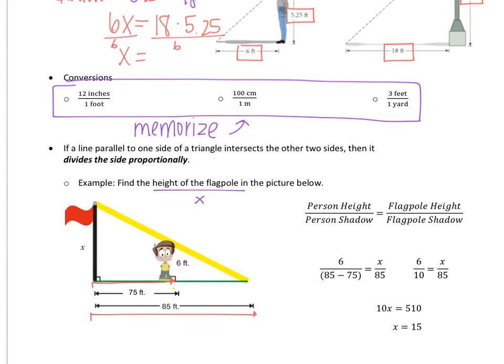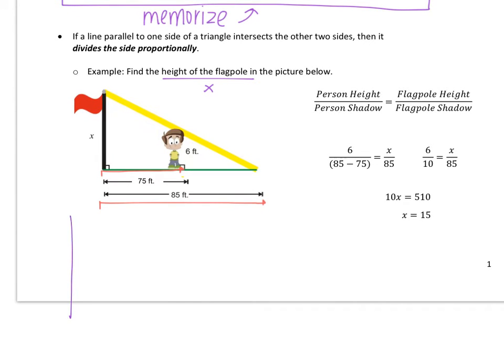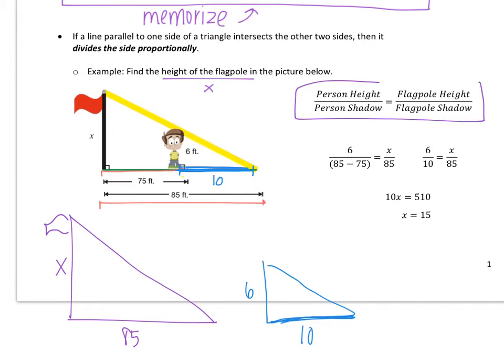So our goal is to find the height of the flagpole. If I were to redraw these pictures, we have the flagpole with its shadow, a height of X, a shadow of 85. Then we have the person with a height of 6 and some shadow length here. This blue piece at the bottom for his shadow is the same as this blue piece here from his feet towards the edge of the shadow, the tip of the shadow. Which means I have to take 85 and subtract away 75. 85 minus 75 leaves me with a shadow length of 10. Now from here we can set up a proportion.